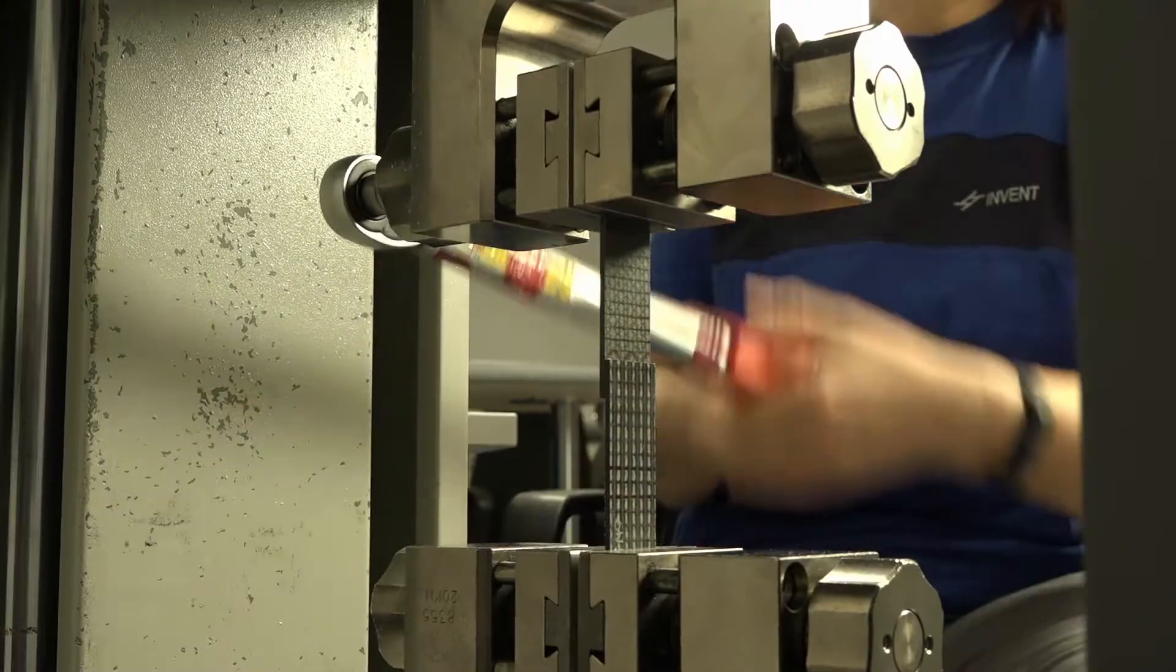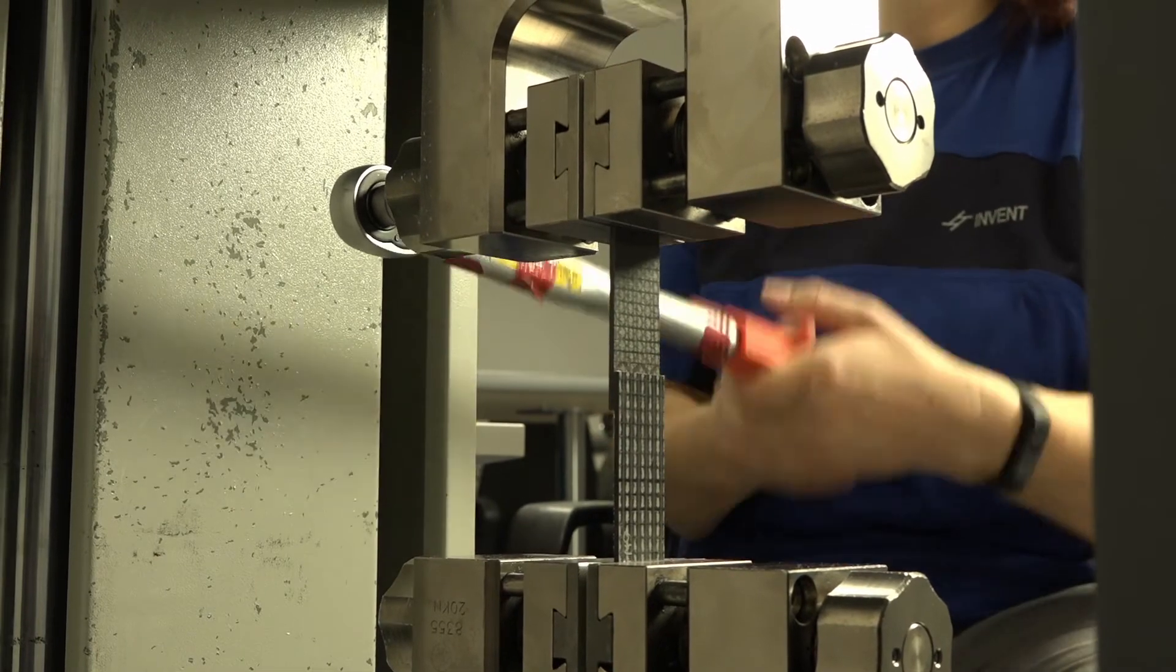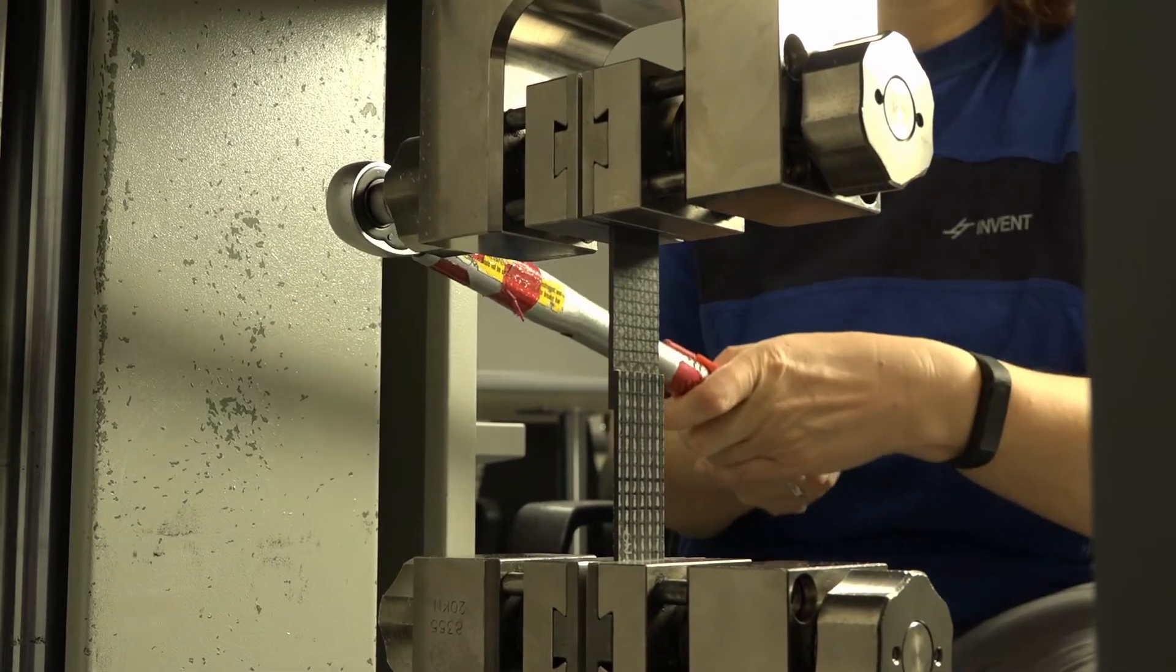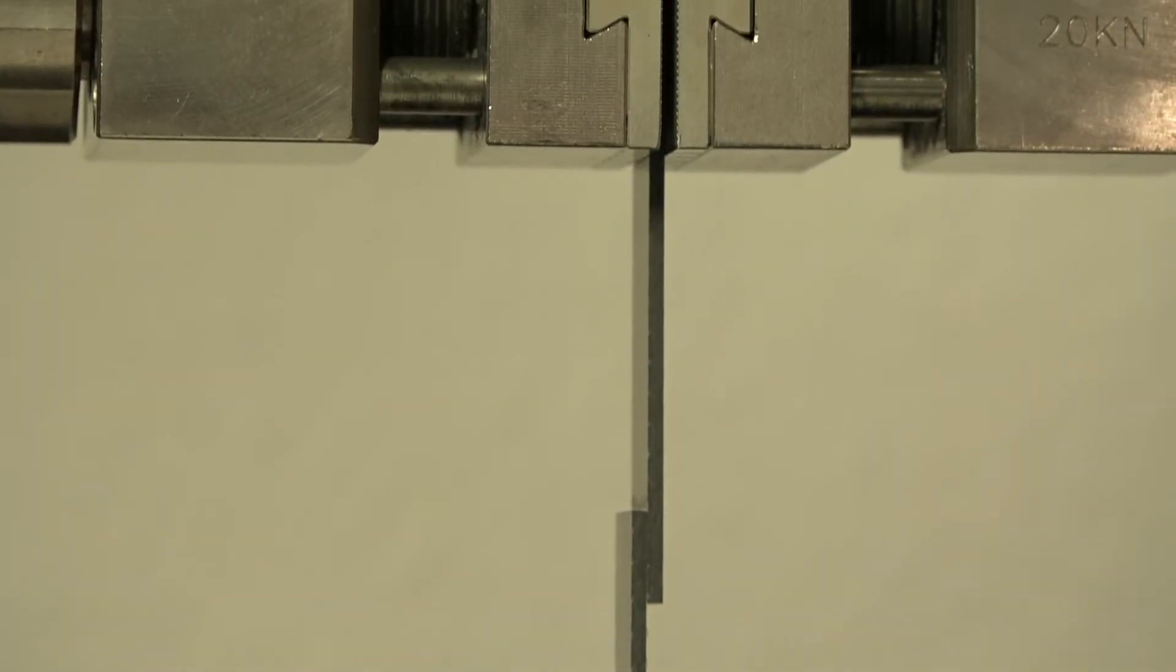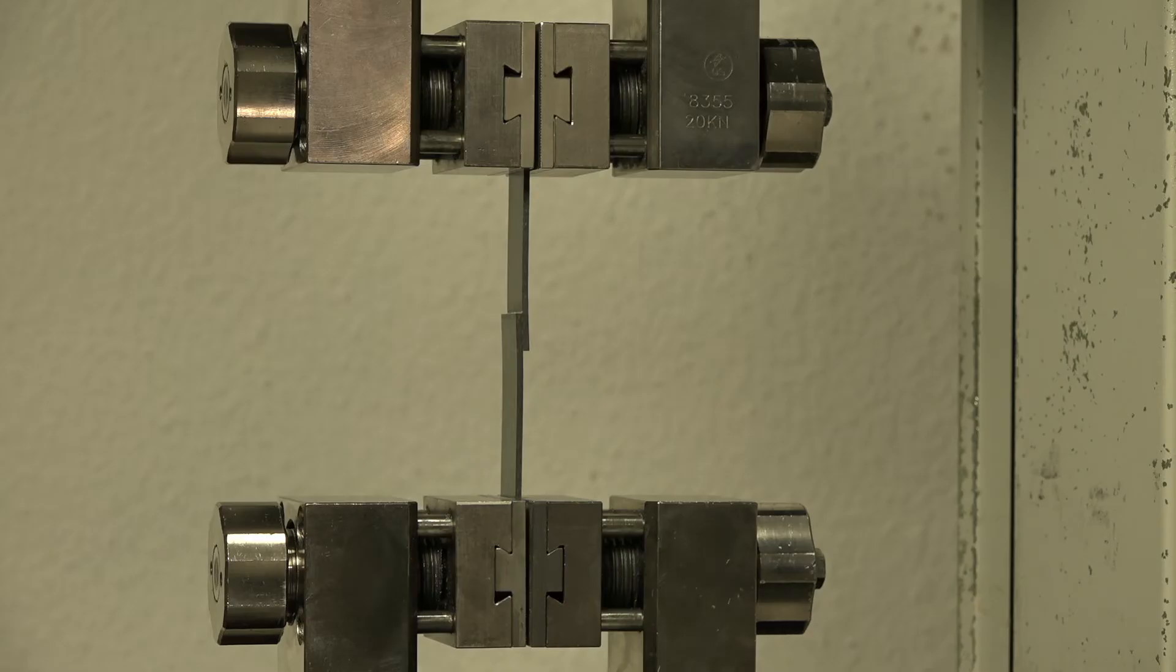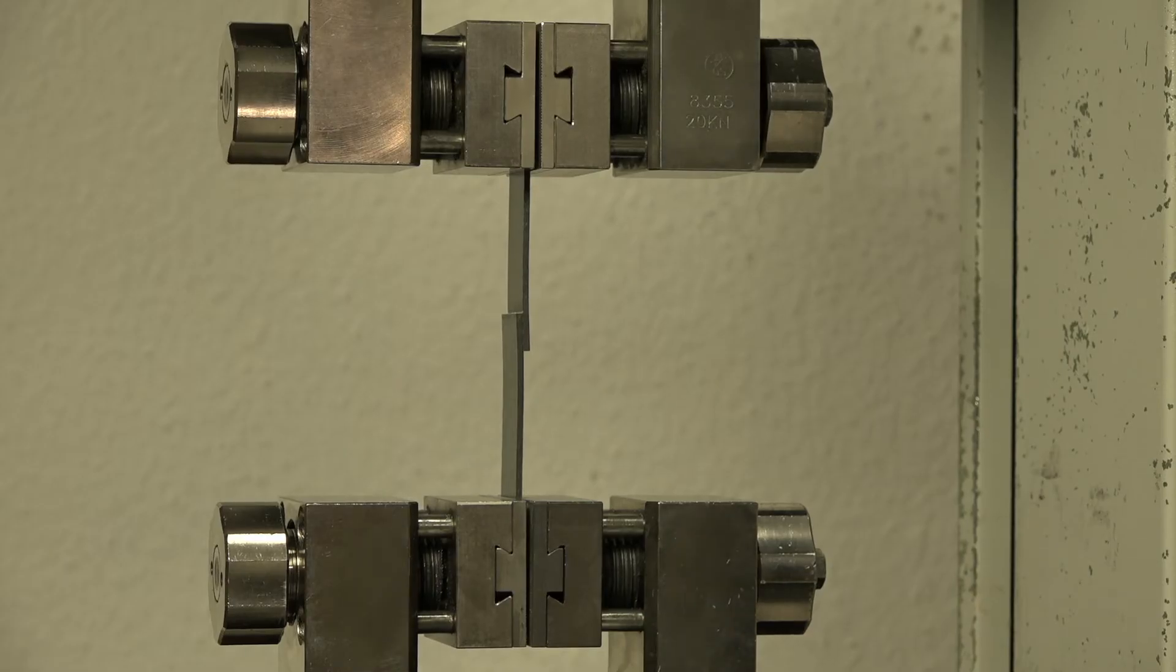Here, a tensile shear sample is shown. The CFRP parts have a thickness of 2 mm. A polyurethane adhesive is used to join the two composite laminates. The specimen is pulled until the adhesive bond fails, in this case at about 5,600 Newtons.